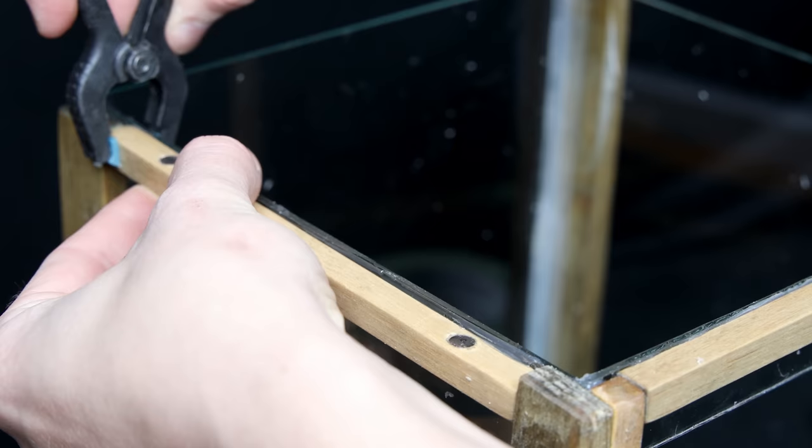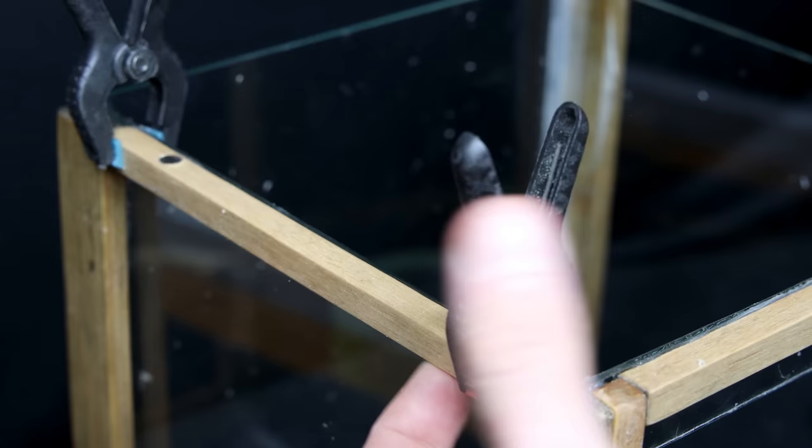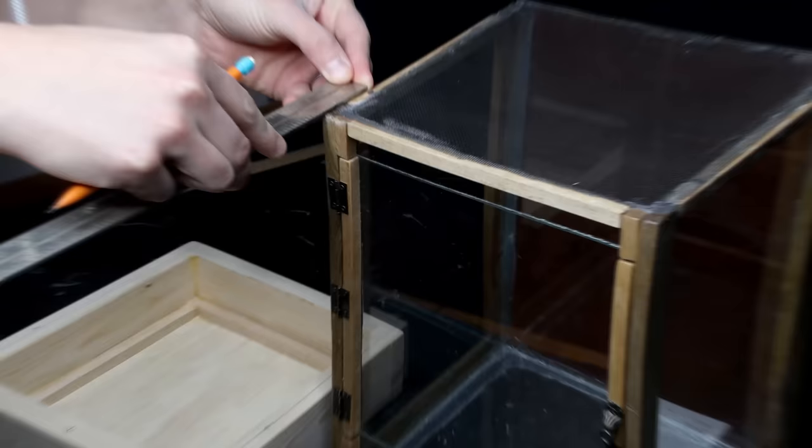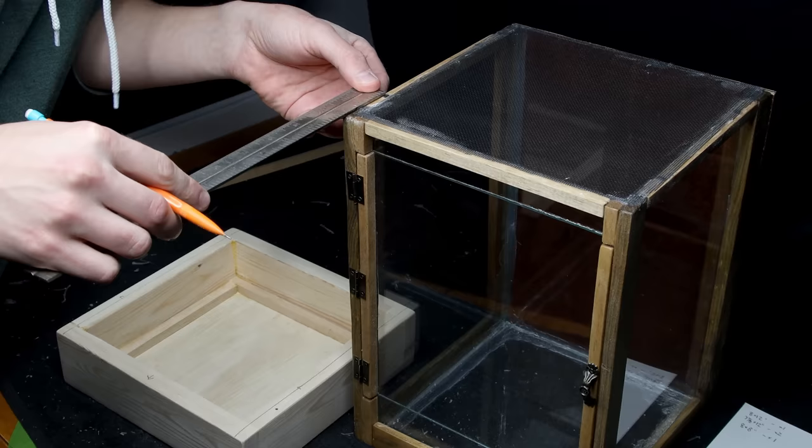Remember those magnets in the top pieces from earlier? I used those to hold the canopy in place. I transferred the measurements for those onto the underside of the canopy. I used the markings to install the magnets like before.